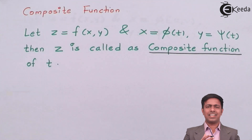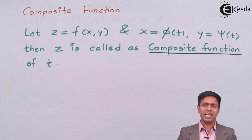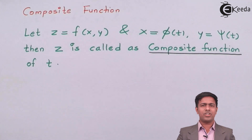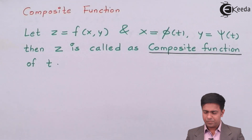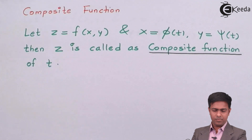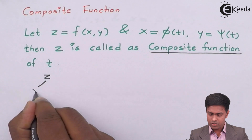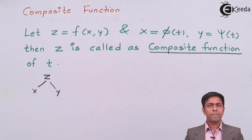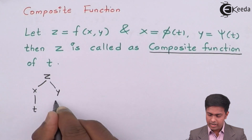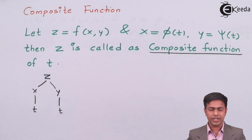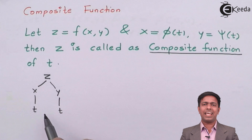To understand this in an easy manner, we always solve composite functions with the help of a tree diagram. Here Z is a function of X and Y; next X is a function of T, and Y is also a function of T. So it means Z is a function of T through X and Y.